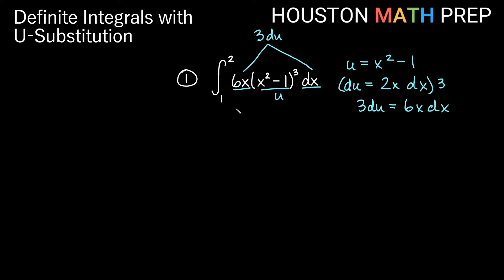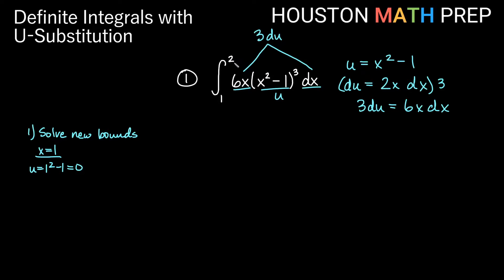Now we'll show you two ways to work with your u-bounds. One way is to solve for new bounds in terms of u using the substitution. So if x = 1, then u = 1² − 1 = 0. And for x = 2, u = 2² − 1 = 3. Then we set up our integral as the integral from 0 to 3 of 3u³ du. That is one way — actually working out the new bounds.